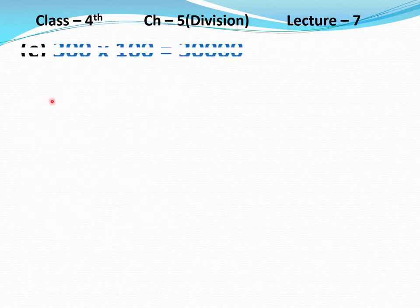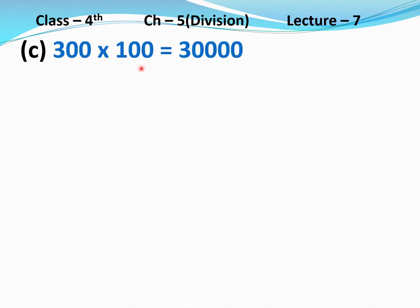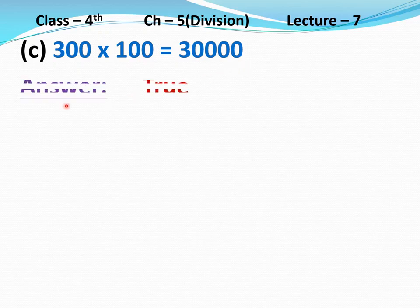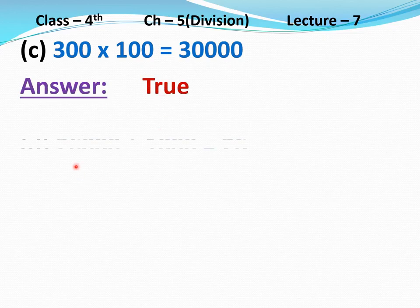Part C: 300 multiply 100 equal to 30,000. First multiply 3 by 1, then put four zeros at the end. The answer 30,000 is correct. So this statement is true. Answer: True.